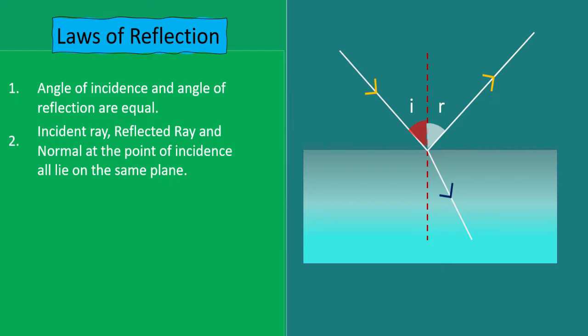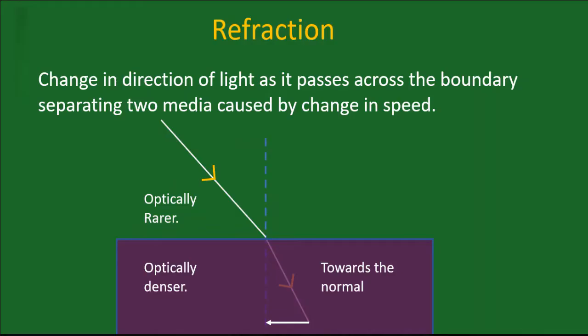The second law of reflection states that the incident ray, the reflected ray, and the normal at the point of incidence all lie on the same plane.